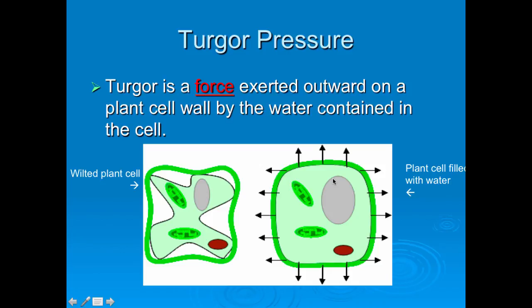When a plant is normal and healthy and it has enough water, the water is pushing out against the cell to give it its full shape, which means it has high turgor pressure.